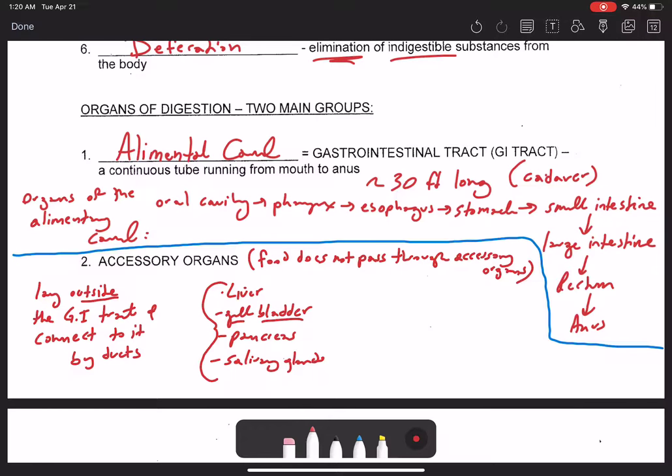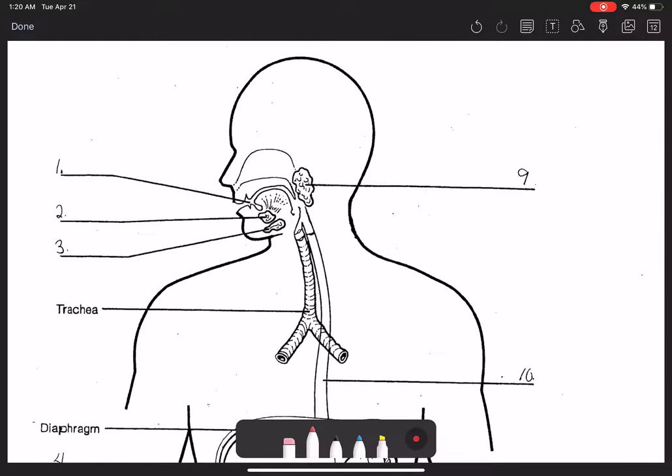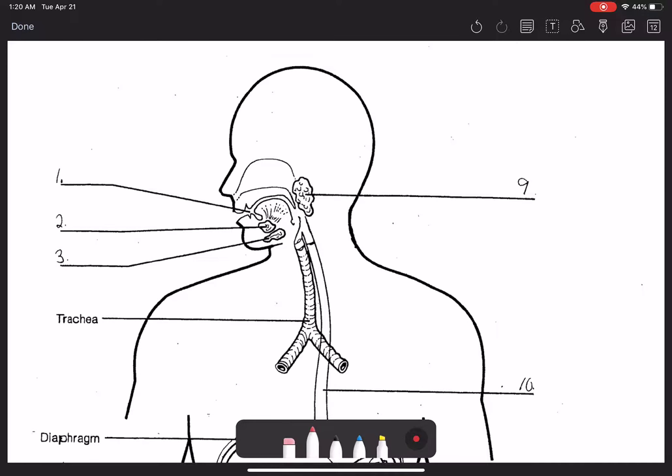Now, there are some other accessory organs that don't involve ducts. These are in the oral cavity. And these are your teeth, which we're going to talk about in great detail coming up soon, and the tongue. But down in the abdominal pelvic cavity, all of the accessory organs are actually going to connect to your GI tract via ducts. So this is just a big overview of the organs of the digestive system.